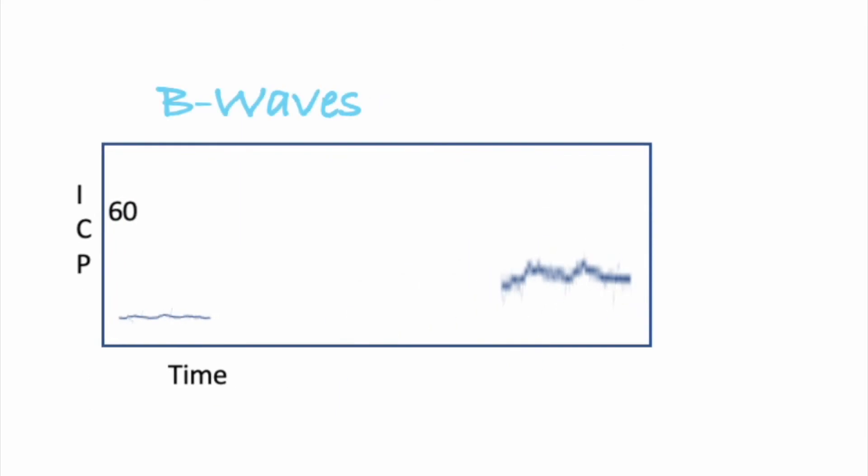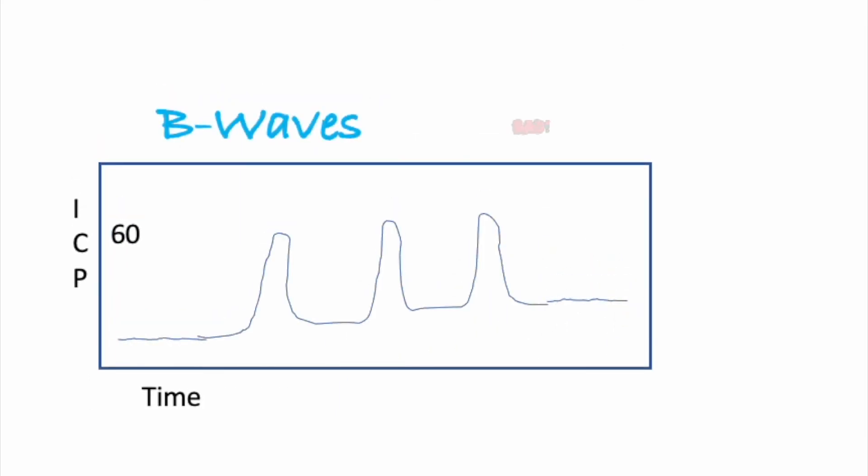Next, we will look at B-waves. I say B-waves are bad. They're not as bad as A-waves, but they're still bad. As you can see on your monitor, you're still having these very large spikes of ICP, way up, huge numbers. But it's coming down much faster.